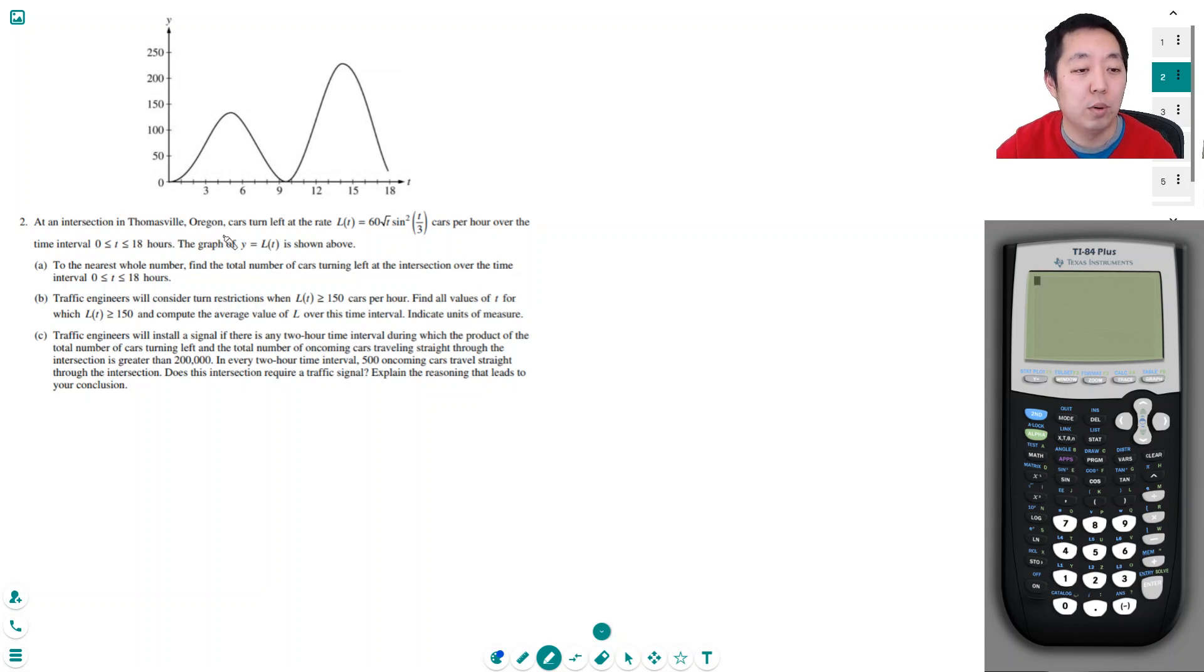At an intersection in Thomasville, Oregon, cars turn left at a rate L(t) equals 60 square root t sine squared t over 3 cars per hour over the time interval 0 less than or equal to t less than or equal to 18 hours. The graph of L(t) is shown above.